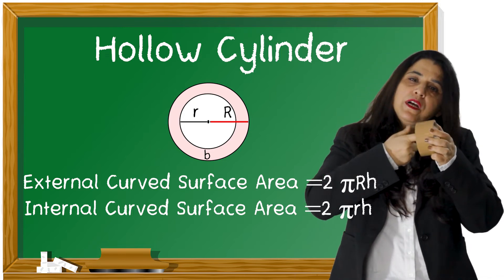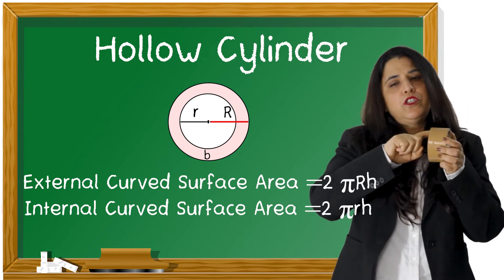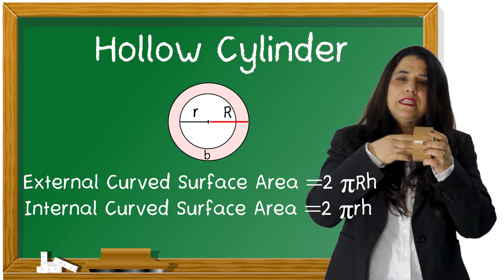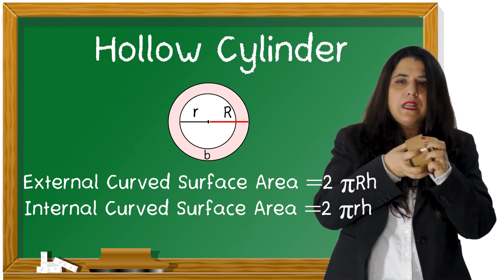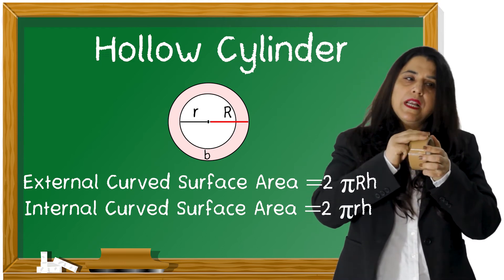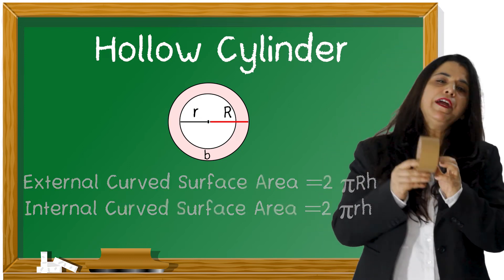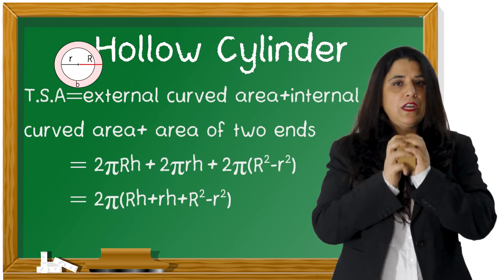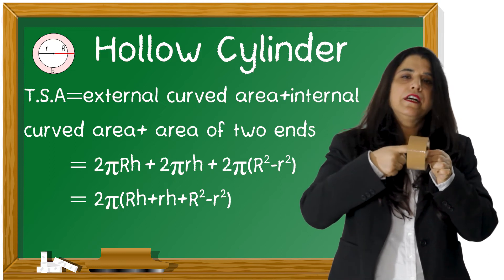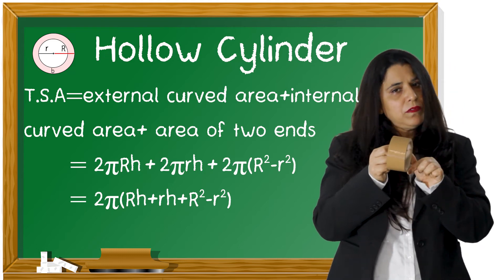When I need to paint the inner surface area, that is 2 pi small r into H — the curved surface area of the inner cylinder. These are two cylinders: inner cylinder and outer cylinder. So inner cylinder curved surface area is 2 pi small r H, and outer cylinder curved surface area is 2 pi capital R H.